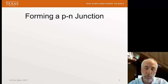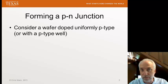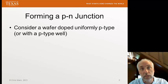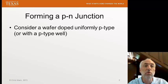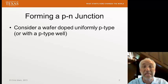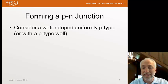Forming a P-N junction. Let's suppose we start with a wafer that's uniformly doped. We'll pick P-type as our example, but it could just as well be N-type. Either the whole wafer is uniformly doped, or we'll consider some small region on the wafer where it's uniformly doped. We'll call that type of region a well — a P-well or P-type well.